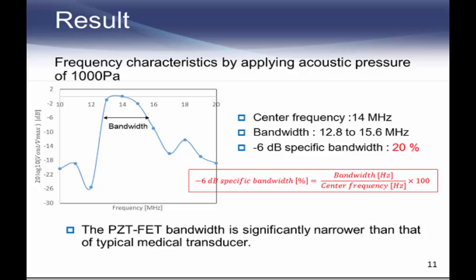This shows the frequency characteristics of PGT-FET measured under acoustic pressure at 1,000 Pa. The center frequency and bandwidth are proved to be 14 MHz and 2.8 MHz respectively. Then the specific bandwidth is calculated to be 20% from this equation. The specific bandwidth of PGT-FET narrows significantly against that of the current typical medical ultrasound transducer of 60%.